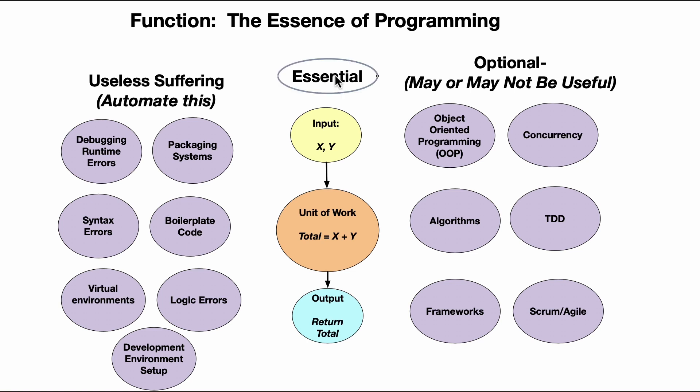If you think about a function here which has inputs x and y, it does a unit of work — let's say a total — which returns the sum of x and y. This applies to all programming languages: Rust, Python, JavaScript, Ruby. The essence of programming is a unit of work that takes inputs, does the work, and returns a result. Anything else is either useless suffering you should automate, or it's optional.